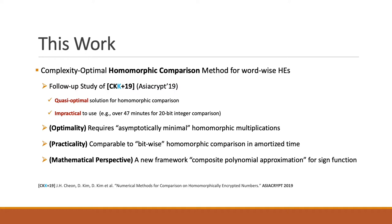Firstly, we finally achieved the optimal complexity, which means the number of homomorphic multiplications, and now it shows quite nice performance in practice — it is now comparable to bitwise homomorphic comparison, which has been the most natural and efficient way, of course in amortized running time sense. Also in mathematical perspective, our work can be viewed as a new framework called composite polynomial approximation for the sine function, and it has potential to be applied to more general functions.